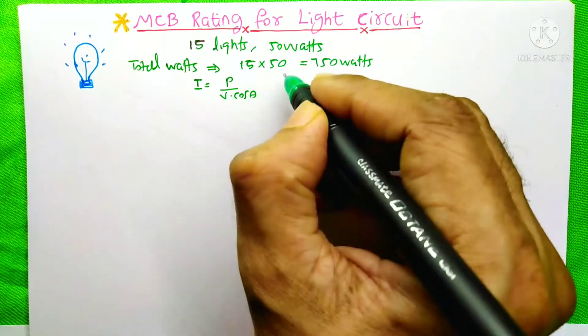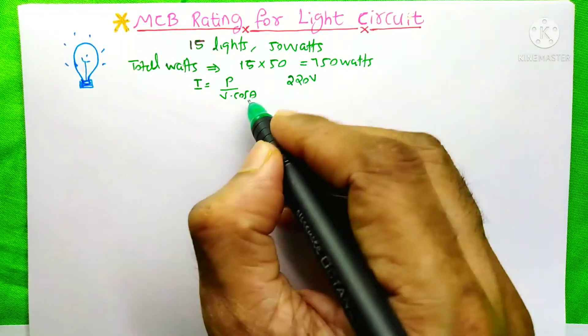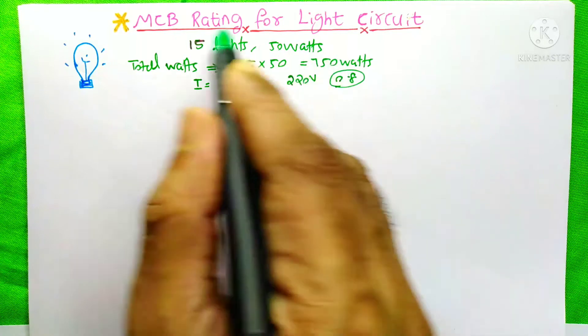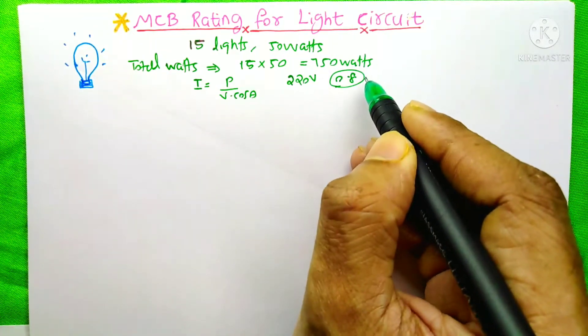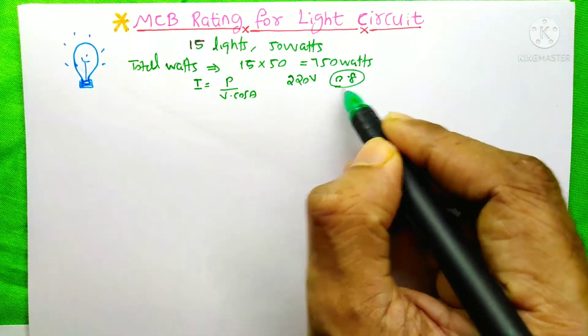Here the voltage is 220 volts and the power is 750 watts, and cos theta is 0.8. Because in this modern world, most of our bulbs are LED, so they will have a power factor of 0.8 up to 0.9. I'll just take 0.8 here.